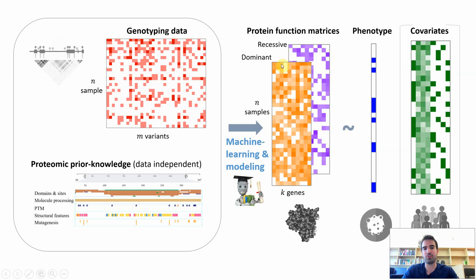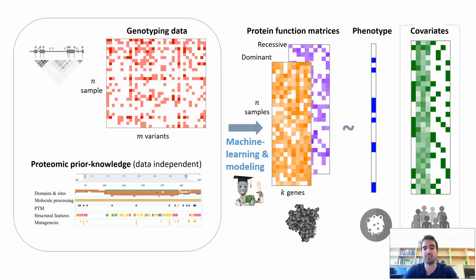From genotyping together with prior knowledge, we try to derive what we call protein function matrices, using machine learning and modeling. Essentially what we try to capture is the amount of damage believed to be caused to each specific gene within each specific individual. For every combination of gene and individual, we derive two scores: a dominant effect score and a recessive effect score. Once we have these matrices, we can look at columns representing specific genes and see whether they correlate with the phenotype of interest, accounting for covariates.